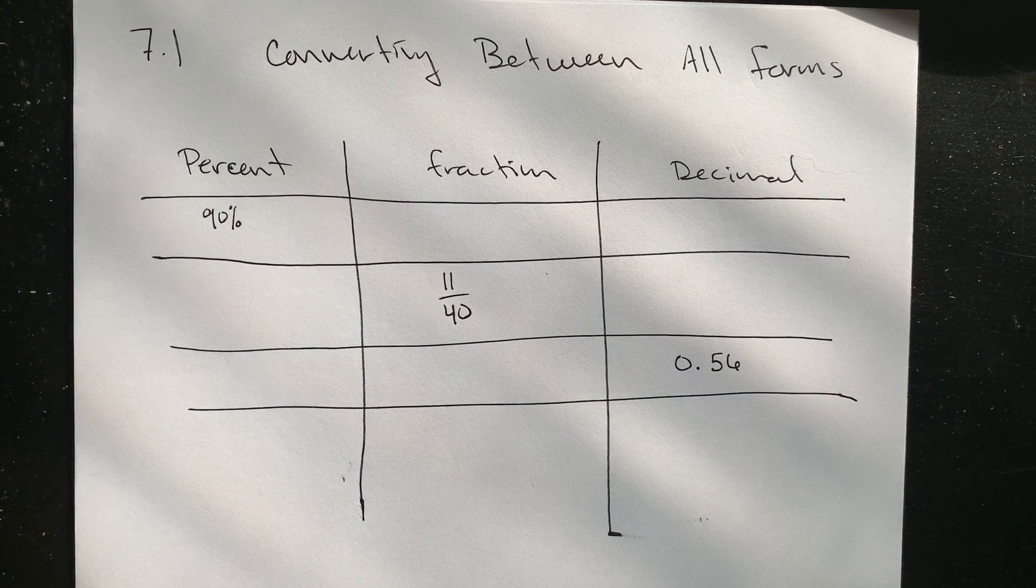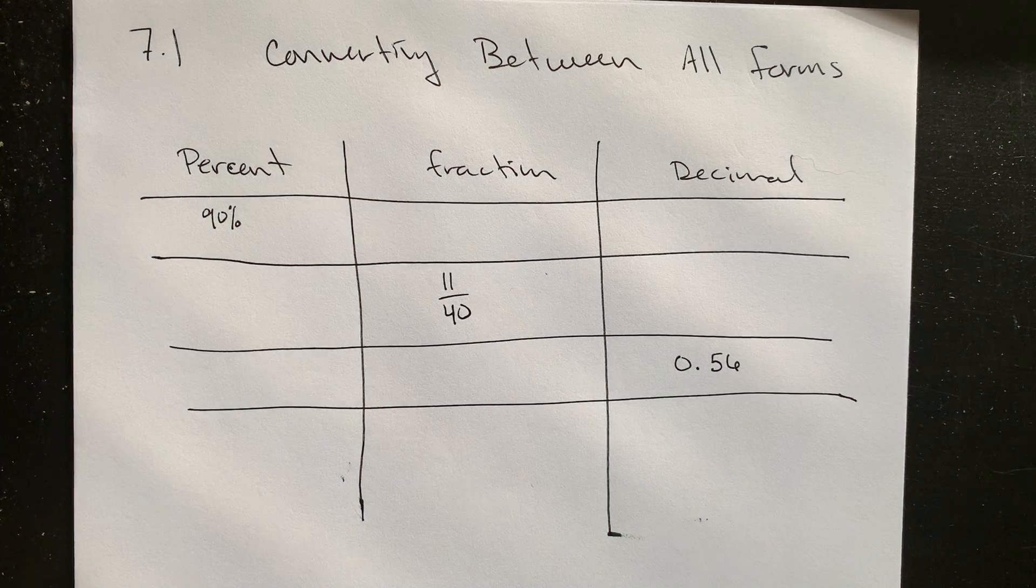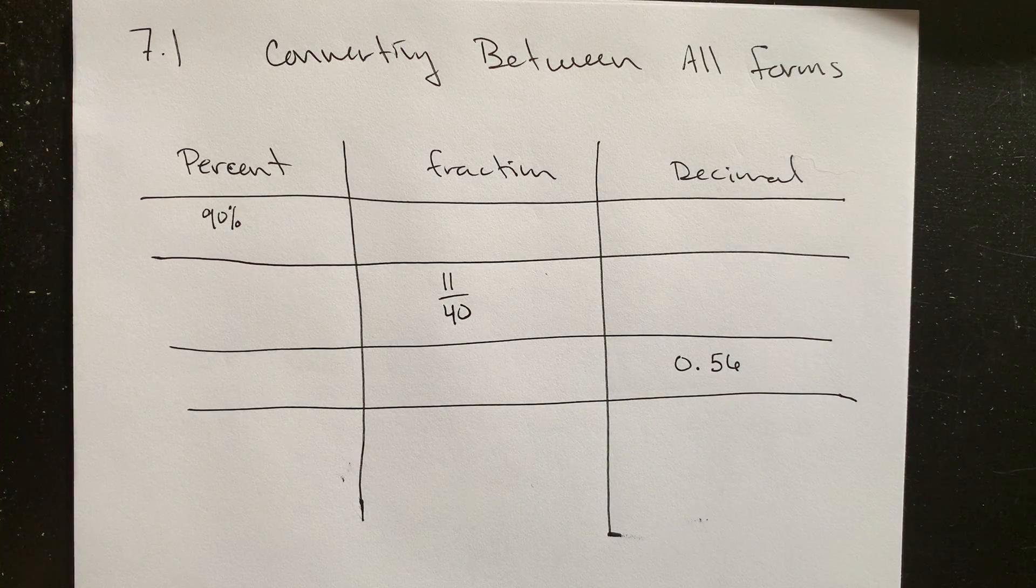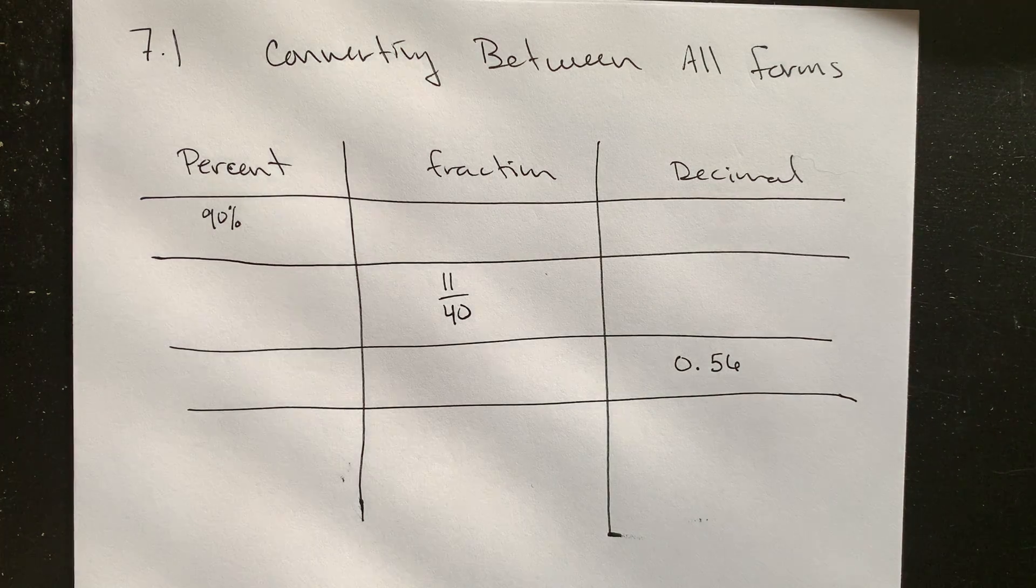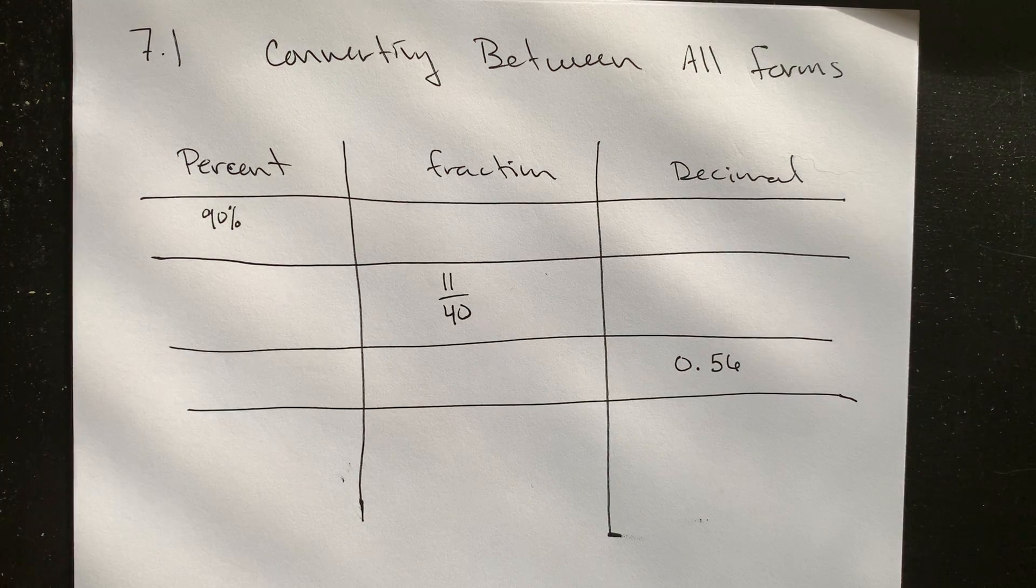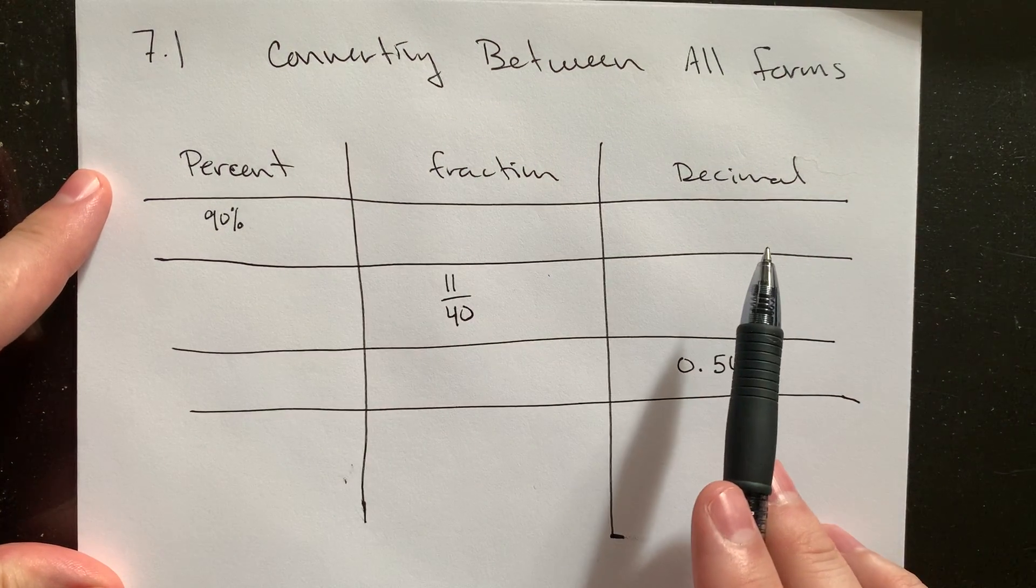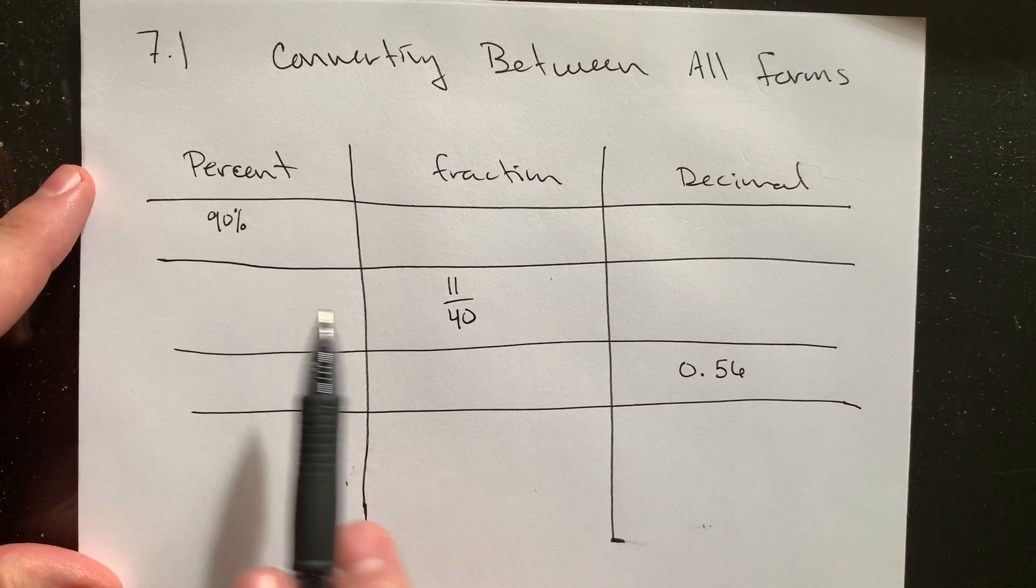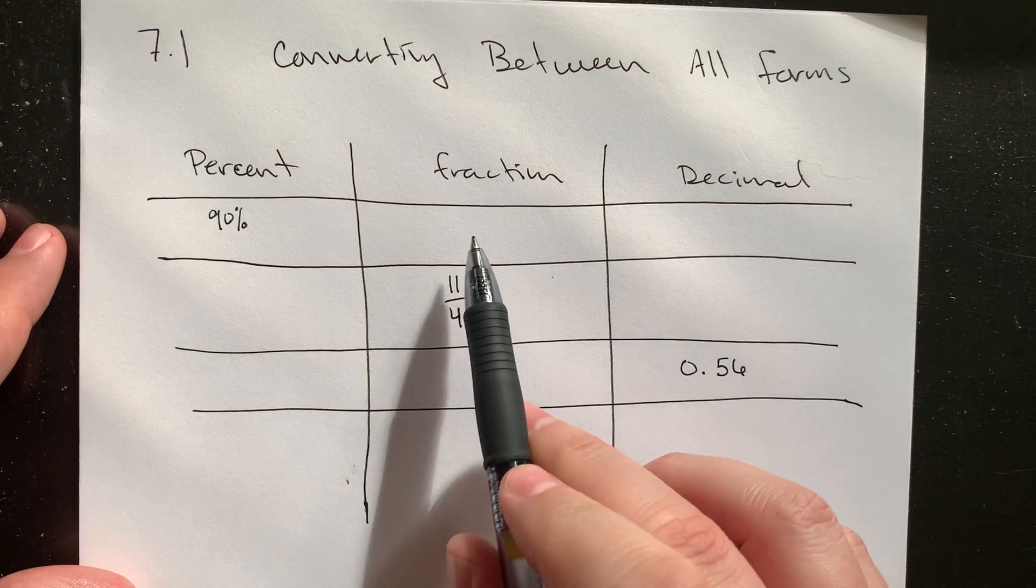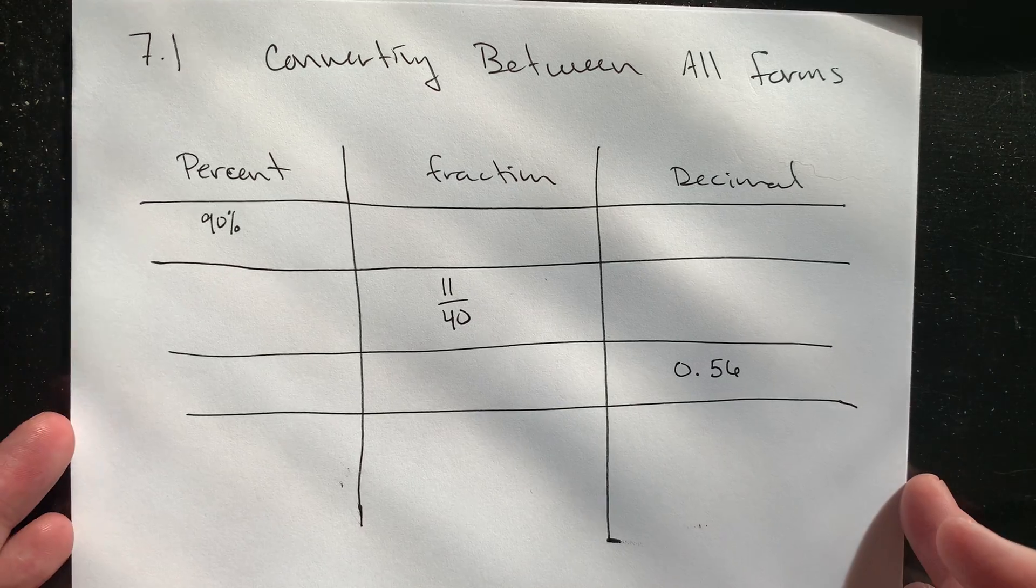All right. So one of my favorite types of problems in this section 7.1, I think there's maybe only one in the homework, but it's a good one. Once you know how to do the conversions between percentages and fractions and percentages and decimals, you can essentially put it all together. In theory, we also in our back pocket can do conversions between fractions and decimals just on their own. And so you can essentially be given a table where you have a column for percents, for fractions, and then for decimals of the same number. And so I can give you one of the three forms and then have you find the other two. So for example, if we've got 90% here, we'd like to have it written as a fraction and we'd like to have it written as a decimal. I'm going to do the work for this down below, actually.